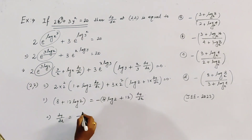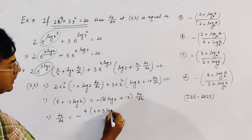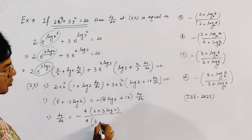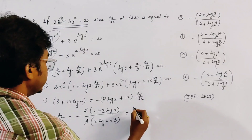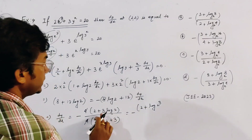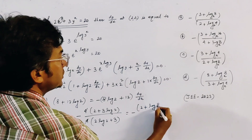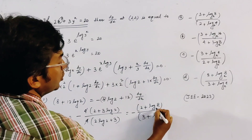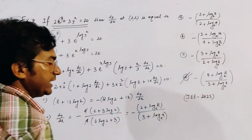Collecting terms, dy/dx = −(8 + 12·log 2) / (8·log 2 + 12). Simplifying by cancelling common factors gives dy/dx = −(2 + log 4) / (3 + log 4), where all logarithms are base e. This matches option D, which is the correct answer.